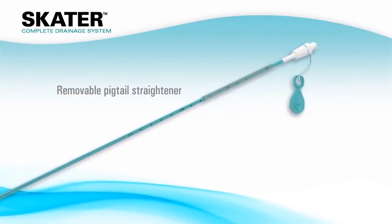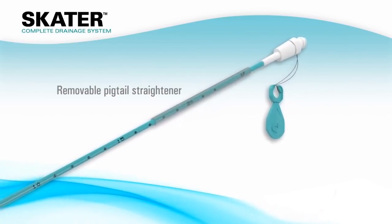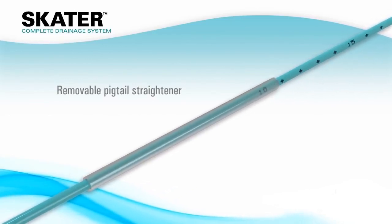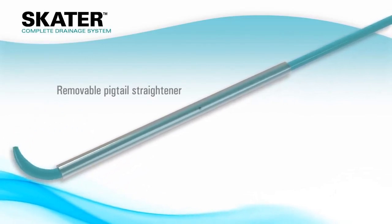The removable pigtail straightener is designed to straighten the pigtail shape and ease loading of the stiffening cannula and or trocar to prepare the catheter prior to insertion.